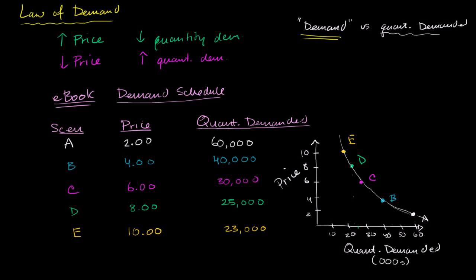We've talked a little bit about the law of demand, which tells us all else equal, if we raise the price of a product, then the quantity demanded for that product will go down. Common sense. If we lower the price, then the quantity demanded will go up. What I want to do in this video is focus on these other things that we've been holding equal — the things that allow us to move along this curve — and think about, if we were to change one of those things, how does that change the actual curve? How does that actually change the whole quantity demanded-price relationship?